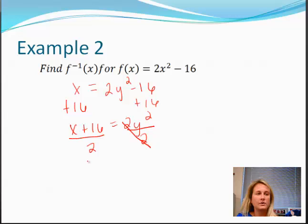So x plus 16 is equal to 2y squared, we can then divide by 2. So we get x over 2, 2 doesn't go into x. So x over 2 and then 2 does go into 16, 8 times. So this is now 8.